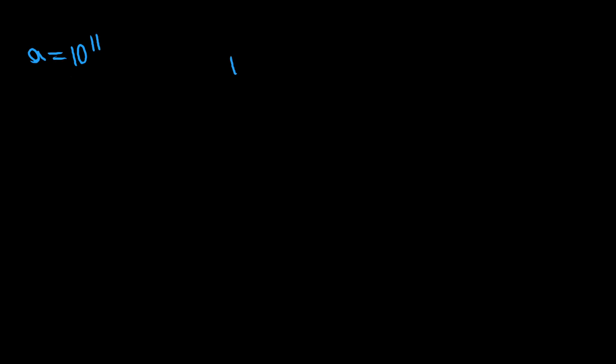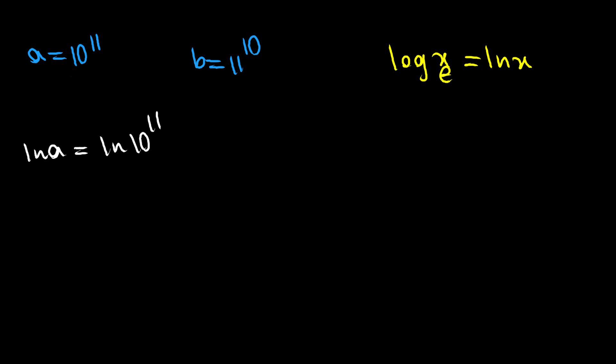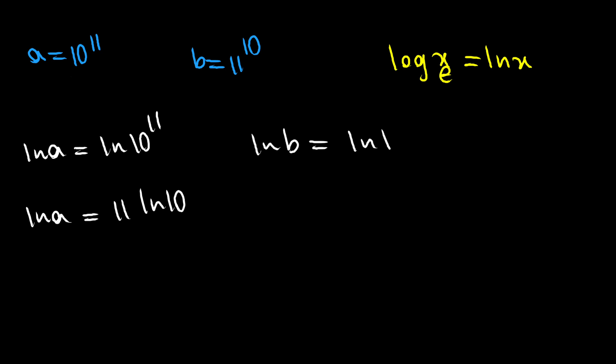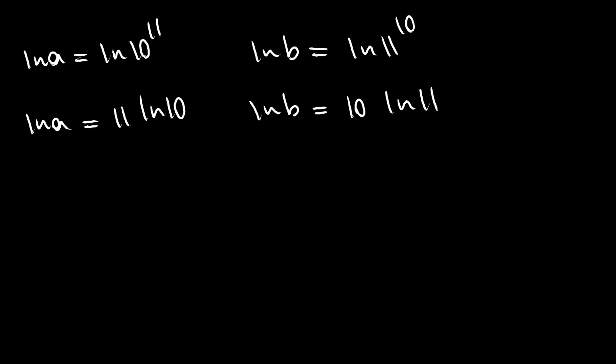Now we can go ahead and talk about the second method. I'm going to start by substituting 10 to the power of 11 with a, and substituting 11 to the power of 10 with b. To get rid of the powers, we can take the log of both sides — specifically the natural log, since log base e equals ln x. So taking ln of both sides: ln a equals ln of 10 to the power of 11, which means ln a equals 11 times ln 10. Similarly, ln b equals ln of 11 to the power of 10, which means ln b equals 10 times ln 11.